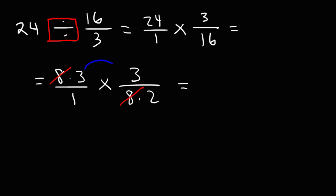So multiplying across, we have 3 times 3, which is 9. And on the bottom, we have 1 times 2, which is 2. So the answer for this one is 9 over 2.